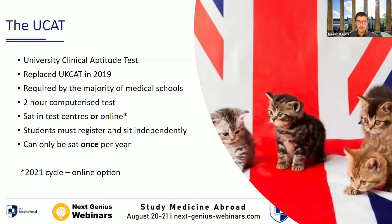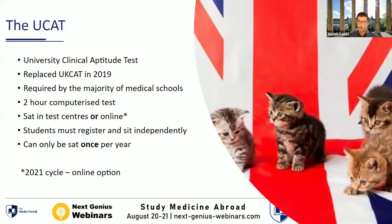The UCAT is required by the majority of medical schools. It's a two-hour computerised test, typically sat in test centres. In the 2021 cycle there's the option to sit it online, though it's unclear if that will continue. Students register and sit the test independently; it can only be sat once per year and is only valid for one application cycle. You must take the UCAT in the summer before launching your UCAS application. Test centres in the UK are similar to driving theory test centres — not everyone in the room will be taking the UCAT.